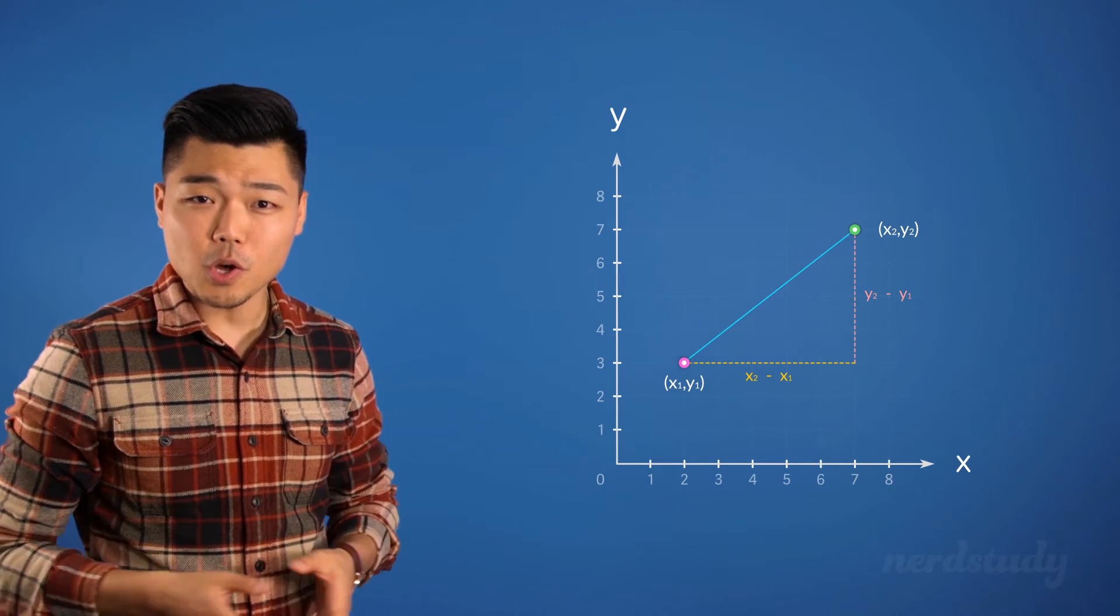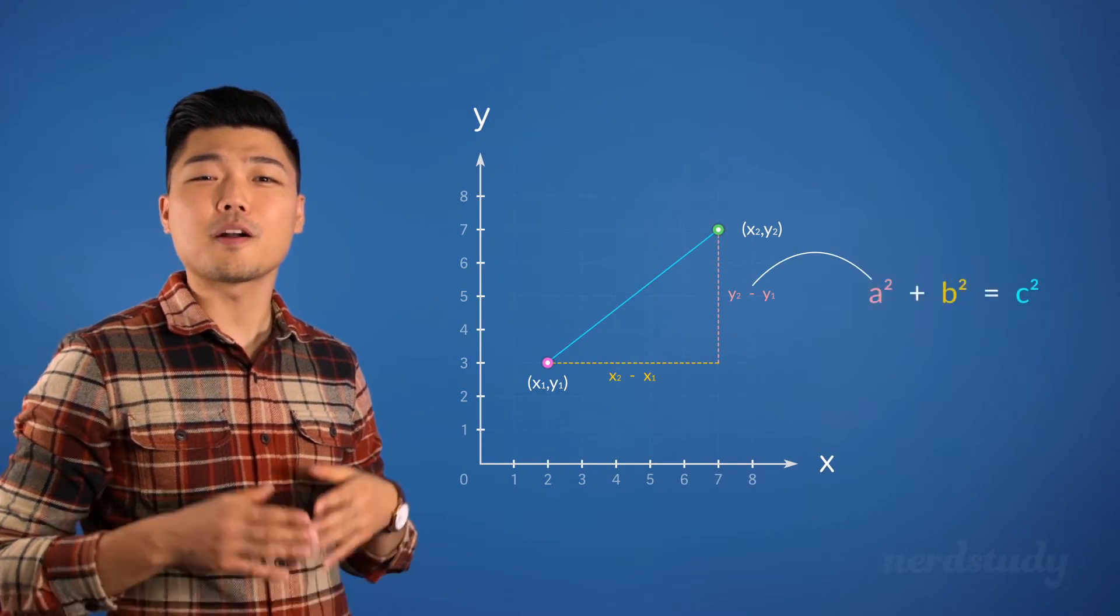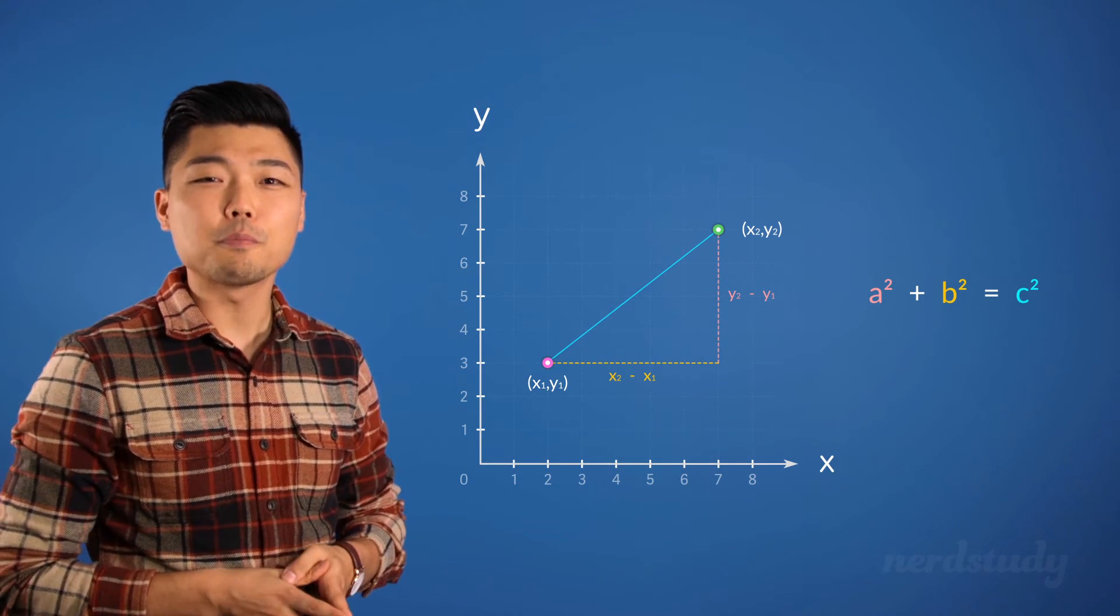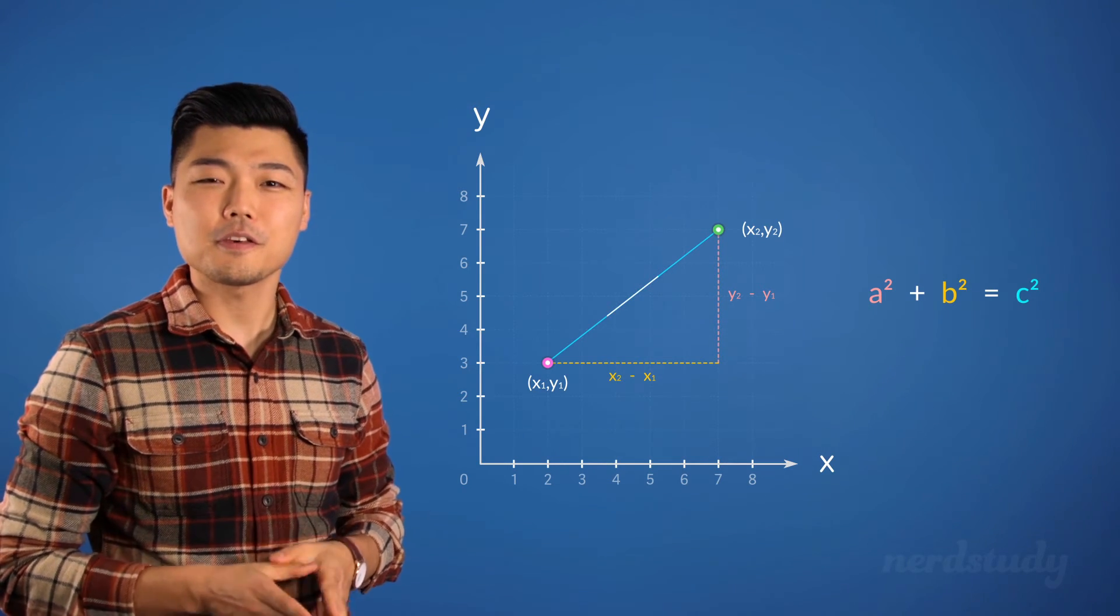With those dimensions, all we have to do is plug them into our a and b for our Pythagorean theorem. And from there, if you square root both sides, you would get the length of c.